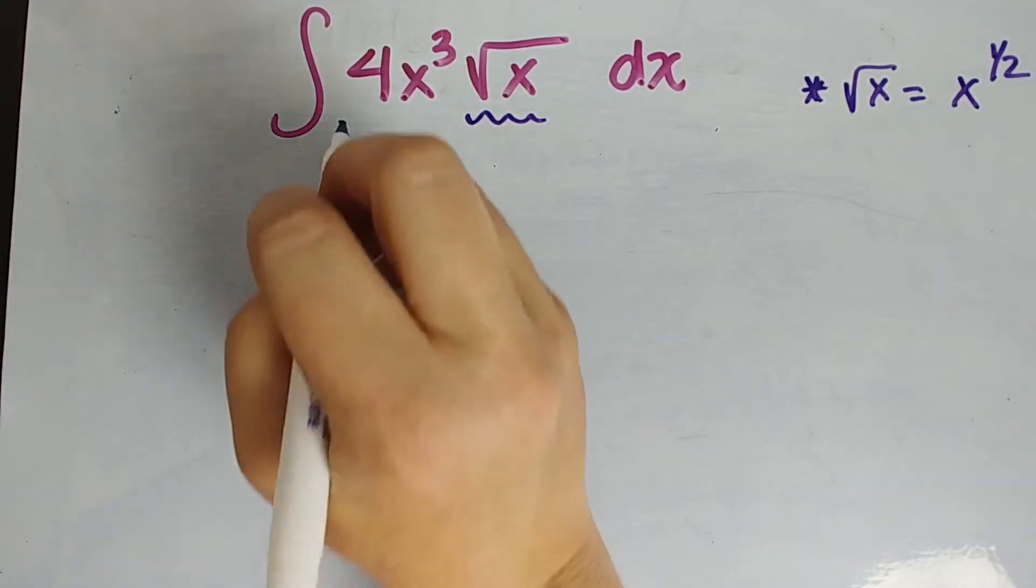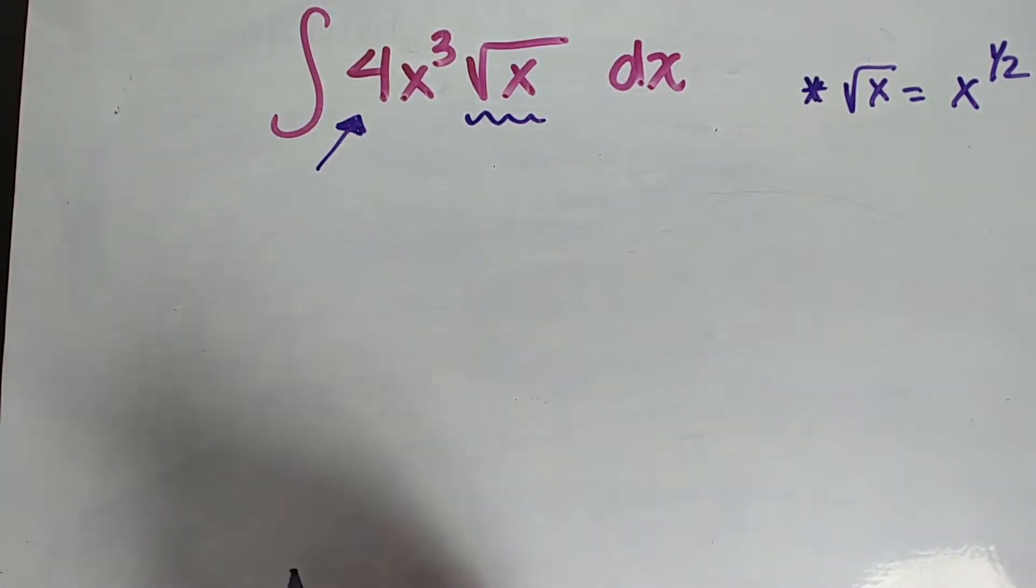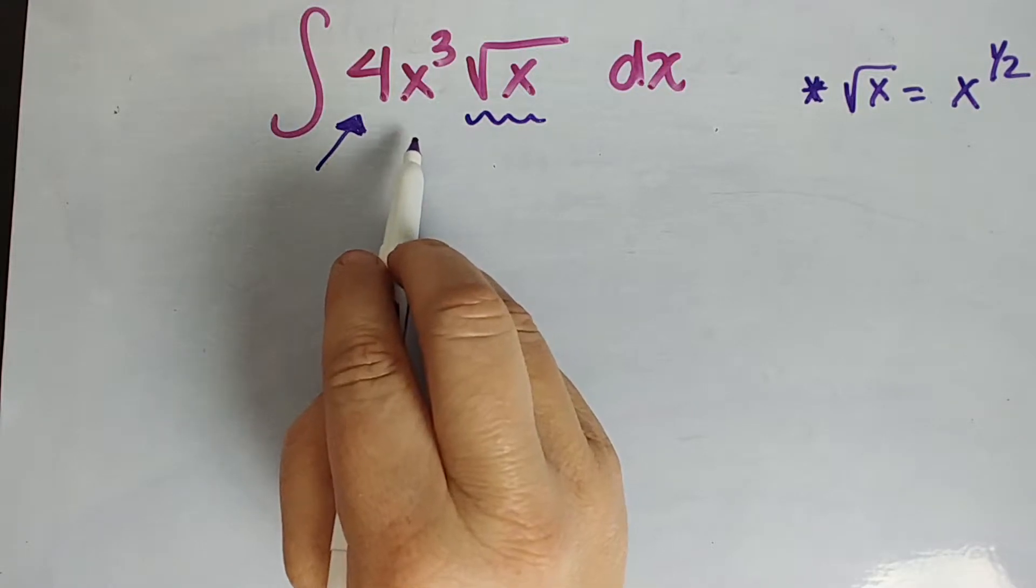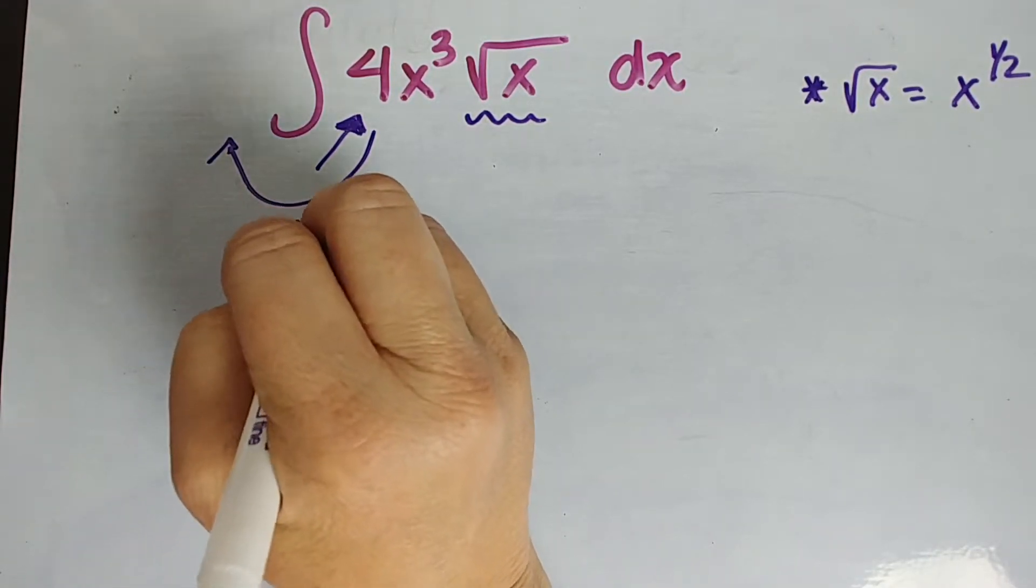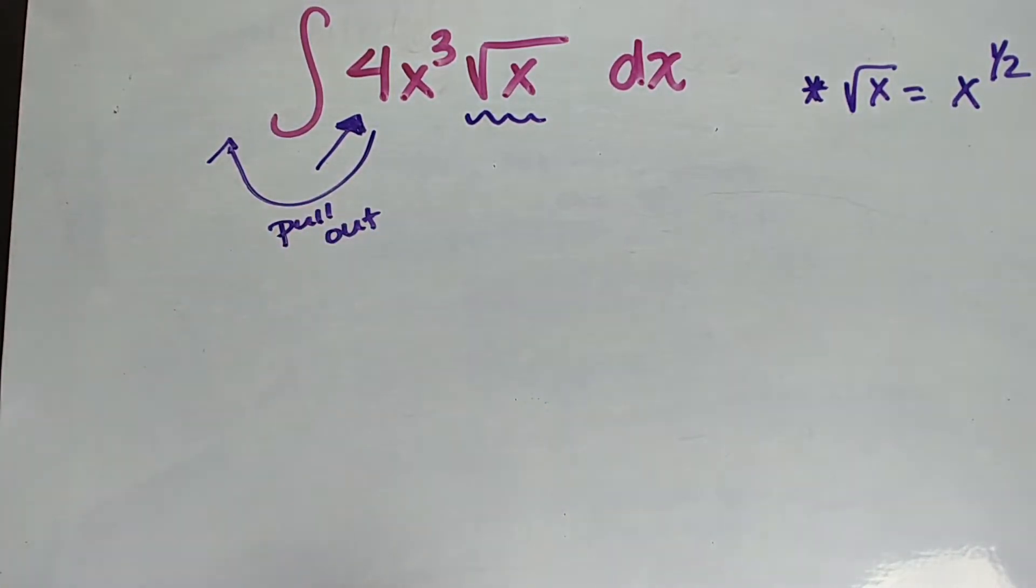Also, anytime you have a constant multiplier, so you have a coefficient, a numeric coefficient that's multiplied, whether it be a fraction, whether it be a whole number, if you had x cubed divided by two, that would be a fractional one half. You can always take that out. So you want to pull that out and worry about that later.